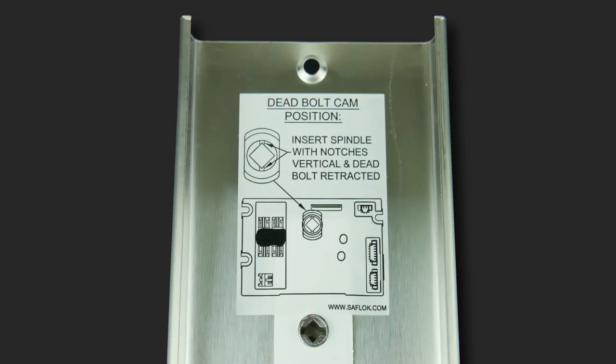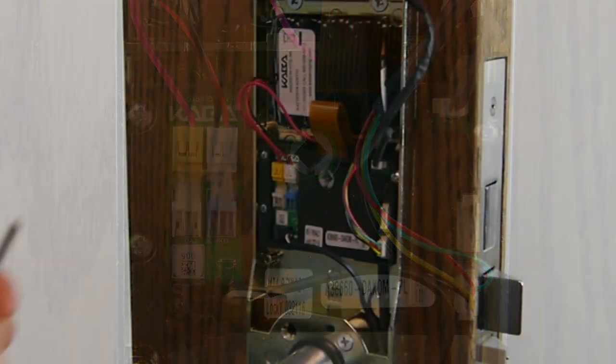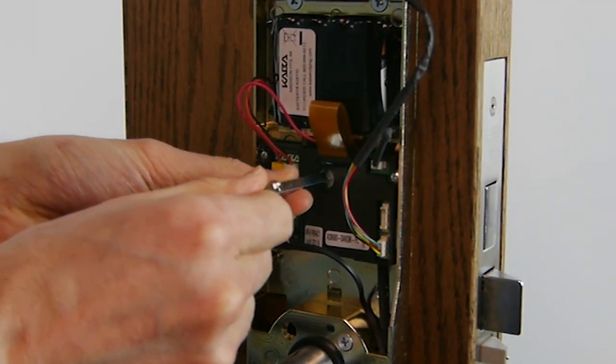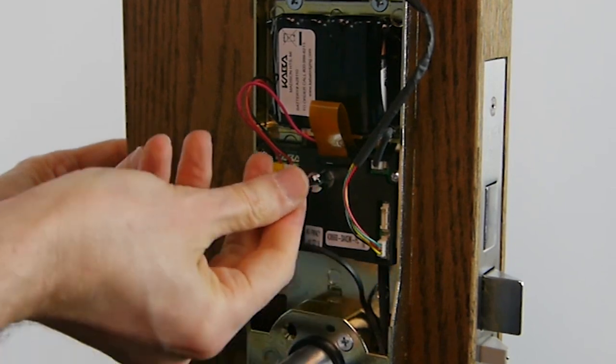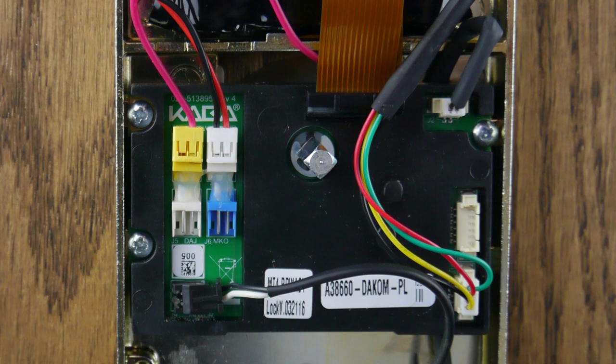The marks on the switch cam should be at the top and bottom when the deadbolt is retracted. With the deadbolt retracted, insert the long end of the deadbolt spindle assembly through the switch cam hole and into the mortise deadbolt hub. The retaining ring should rest on the switch cam when fully inserted.